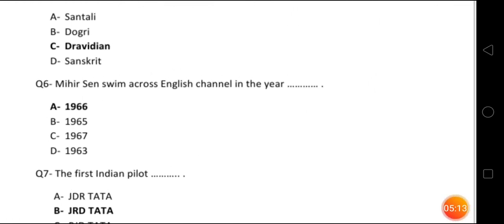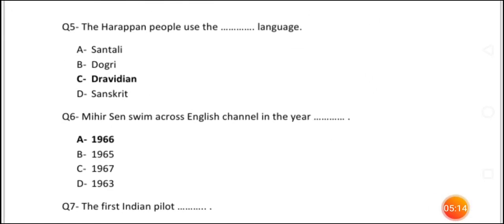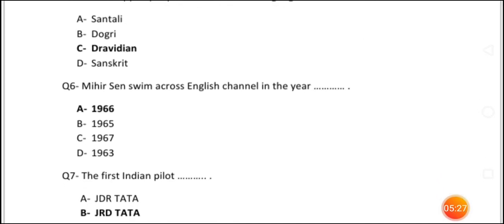Question number 5: The Harappan people used the dash language. The answer is Dravidian language — that is what they used. Question number 6: In which year did May He swim across the English Channel? The answer is 1966. I had also made you write this in your notebook.